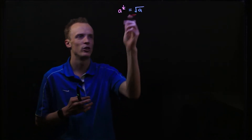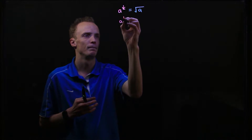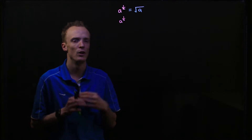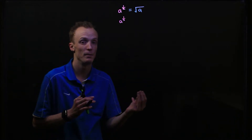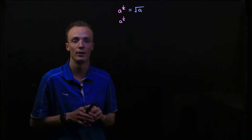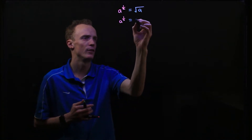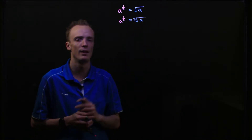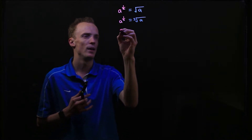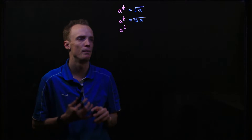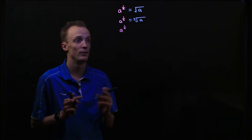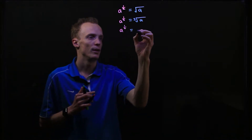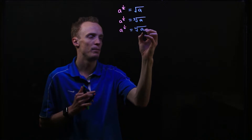Now if we consider what happens when we change this denominator to 3, what that essentially means is we need to find the third root of our a value — or what number times itself three times will give our base value. So we're essentially finding what's known as the cube root, or the third root, of our a value. Now if we keep extending this and we had a to the power of 1 fourth, that denominator is telling us that we need to find the fourth root of our base value, which we write as the fourth root of our base value.